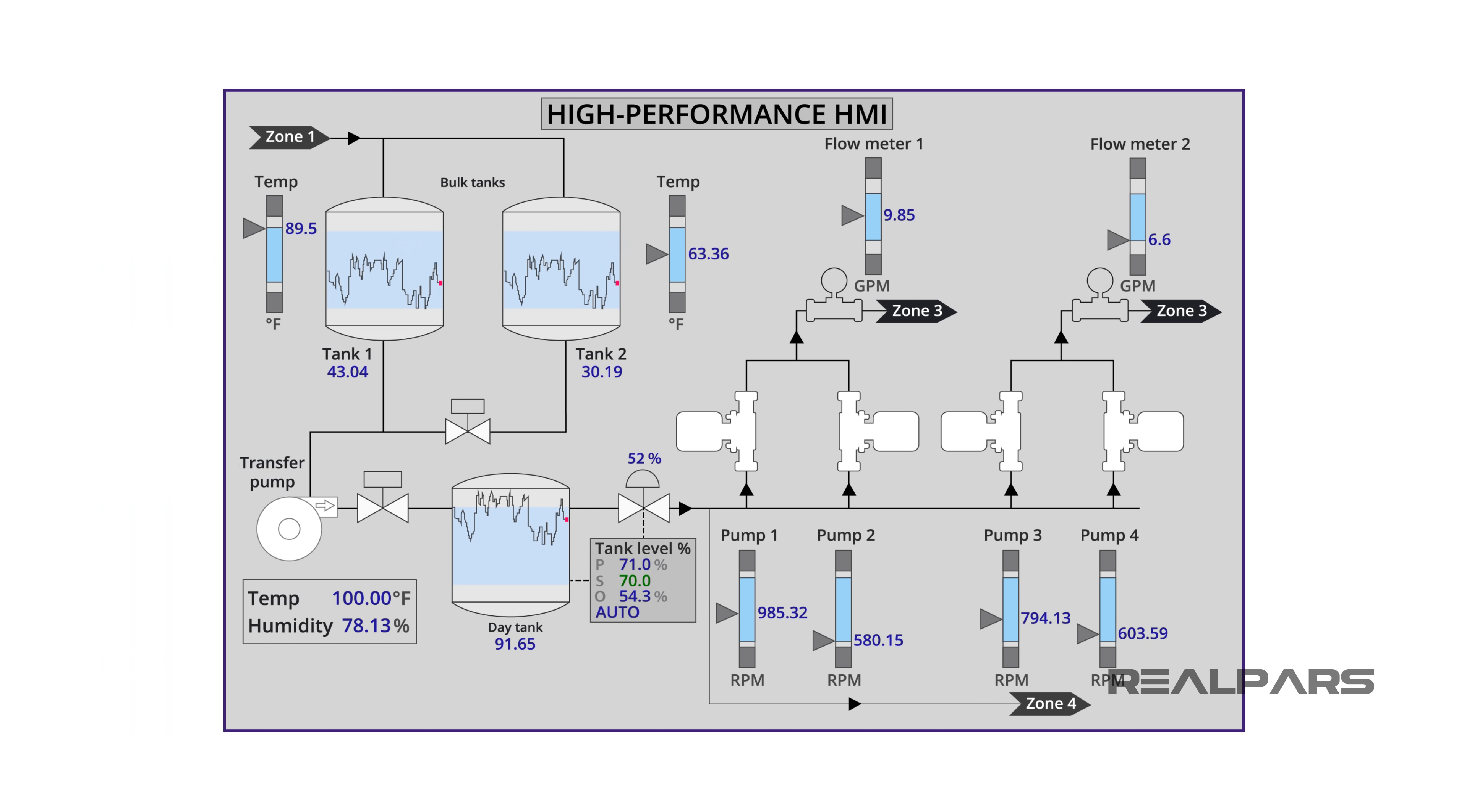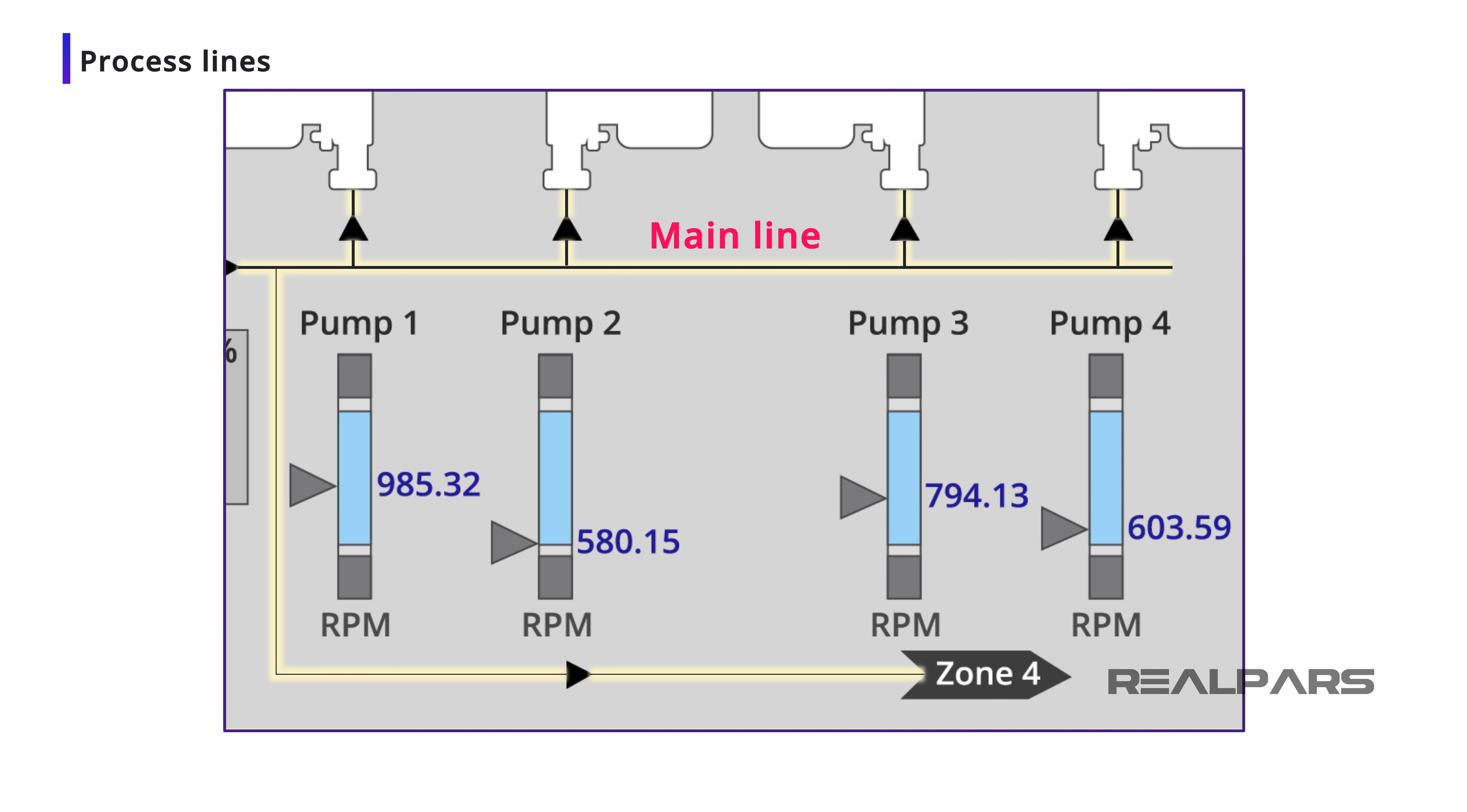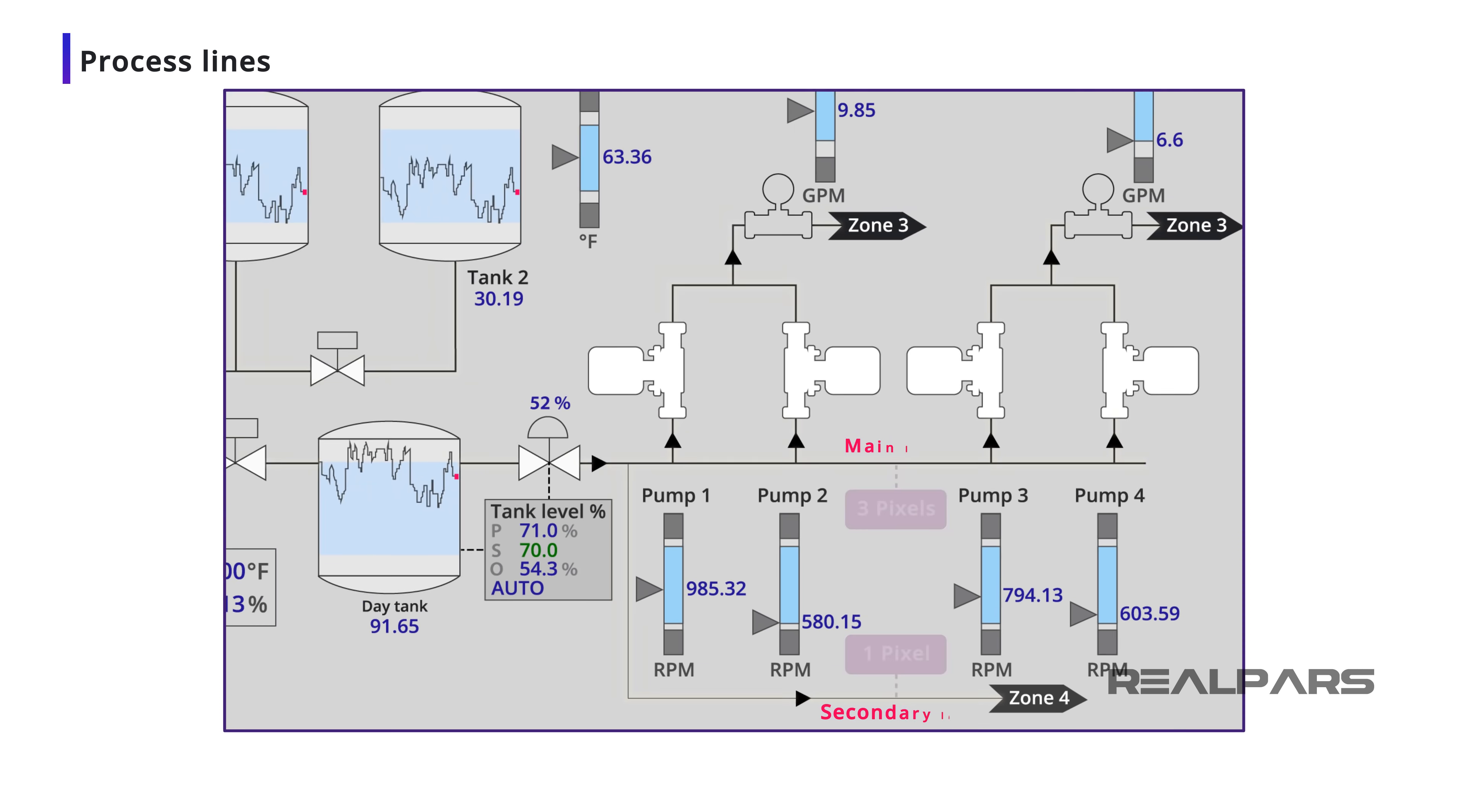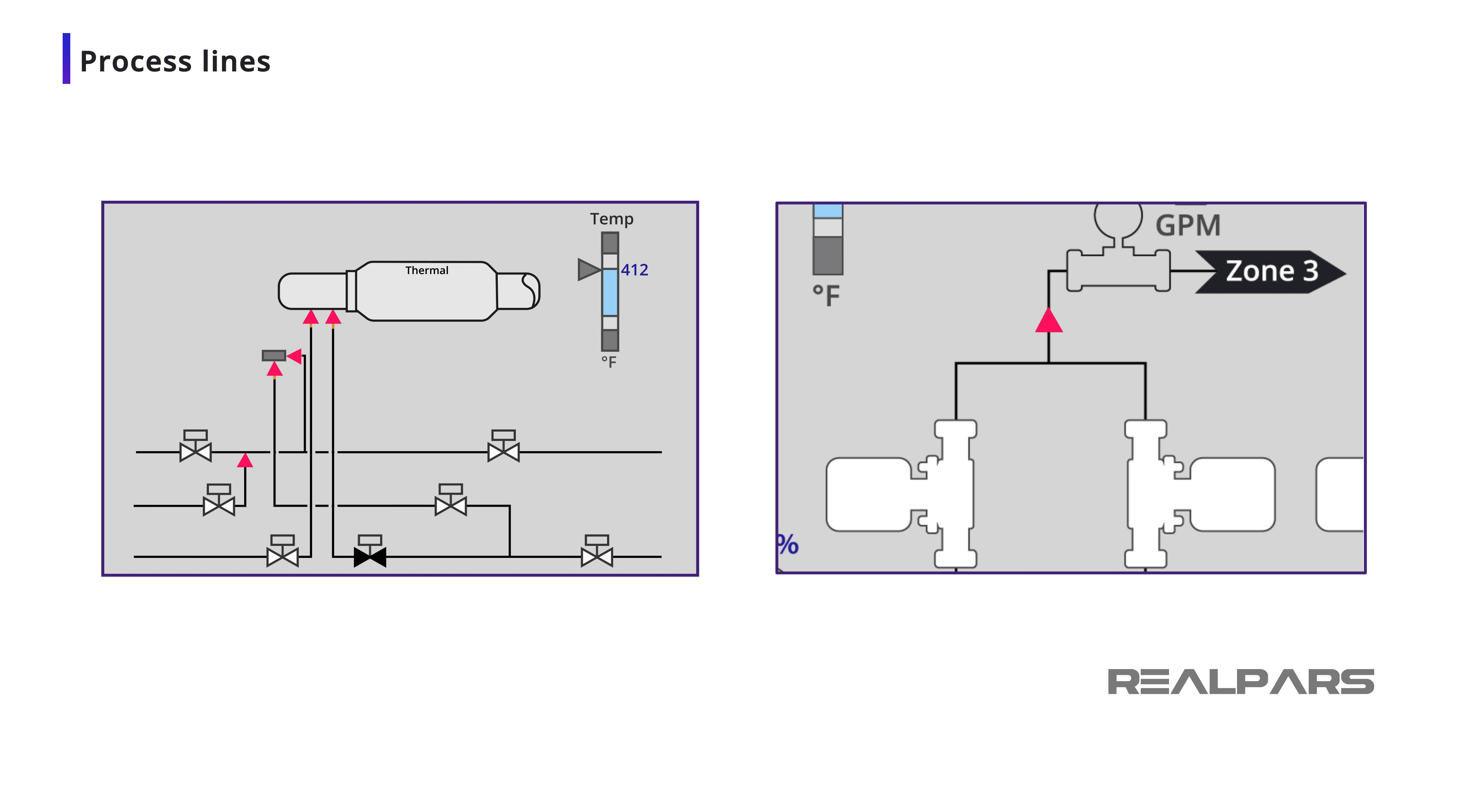When creating lines, vessels, and static equipment, it is important to show them correctly. For instance, process lines should be dark gray or black, with line thickness or weight used to differentiate their significance. The main process lines should be 3 pixels in width, and secondary lines should be 1 pixel in width. The use of arrows to depict process flow direction should be kept to a minimum, and primarily used where lines intersect or tee off from each other.